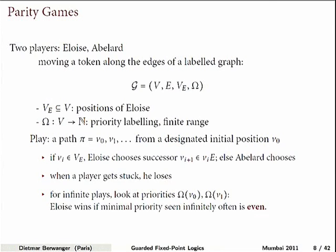To play on such a graph, we start at a given position — a constant of the description — and the two players form a path. If we are at a node belonging to player Alois, she chooses the successor; otherwise it is Abelard who chooses the successor. It can happen that a player gets stuck, and then that player has lost and the play is over.